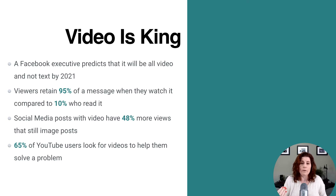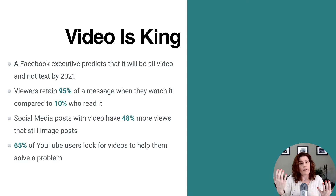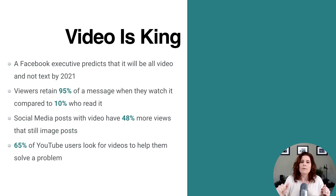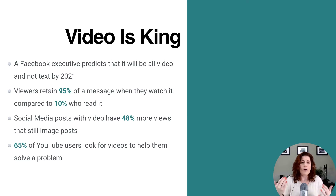The platforms reward you for video. If you've got two identical posts — same content, one with video and one with a still image — that video post is going to get 48% more impressions and reach. The platforms know we want video, so they show it more to keep us coming back. And 65% of YouTube users look for videos that help them solve a problem. Every company's product or service solves a problem, so having video that talks about how you solve problems is just gold. You can do it for all your educational and behind-the-scenes content.